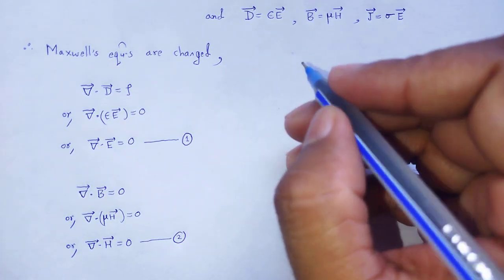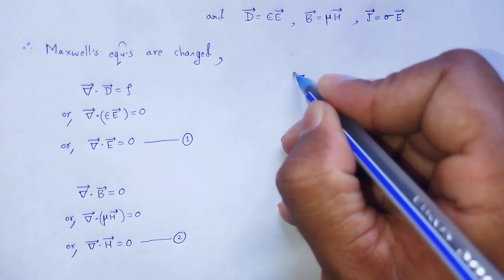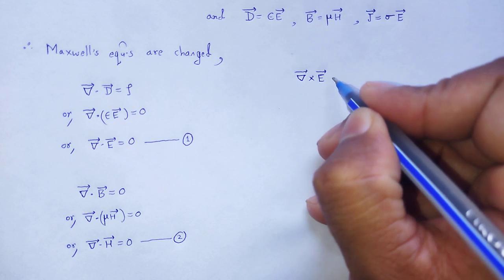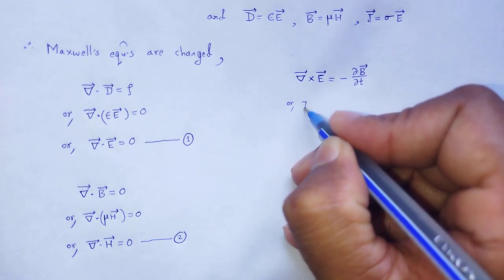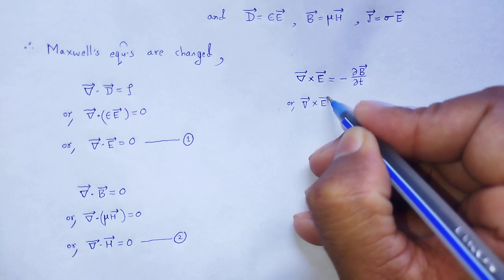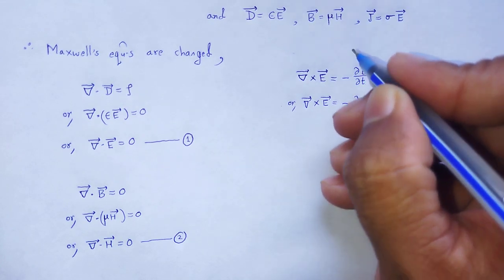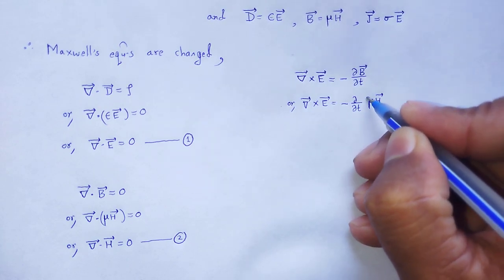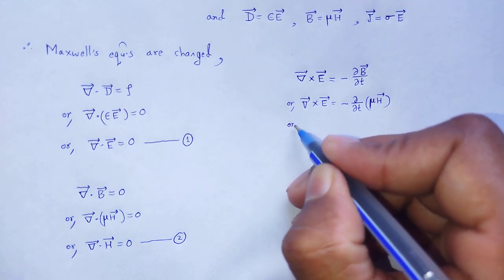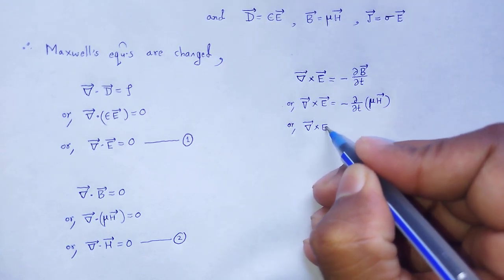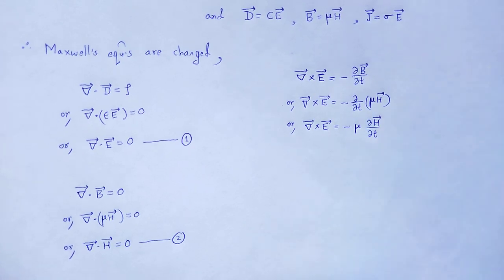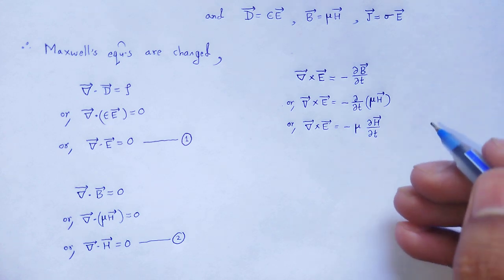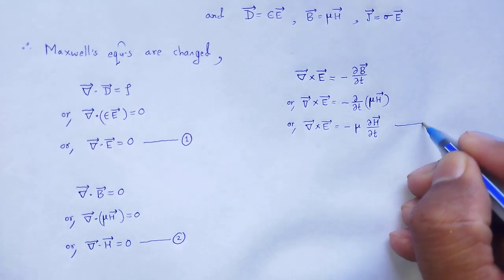Next, Maxwell's third equation: curl of E vector equals minus del B by del t. So grad cross E vector equals minus mu del H by del t. This gives us equation number 3.